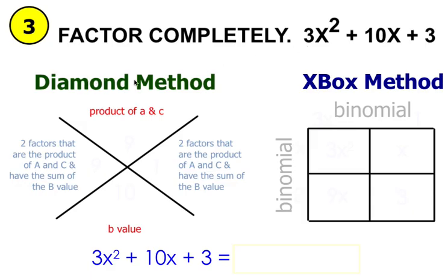So when you set up your diamond method, draw your x, and at the top, as always, you find the product of your a and c value. So our a value here is three, our c value is three, so three times three gives you a value of nine.